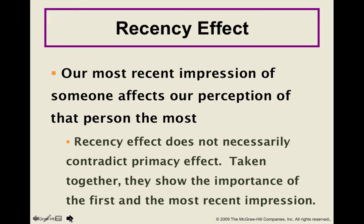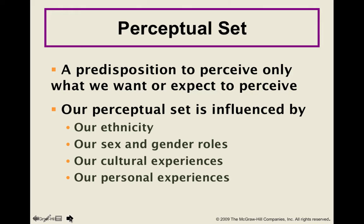Our perceptual set limits what we perceive. Our perceptual set is our ideas about the world — what we use when we go through the perception process. We have a predisposition to perceive only what we want to or expect to perceive. Our experience and our expectations that spring from that experience cause us to see things in a particular way. That perceptual set is influenced by everything we've experienced: our ethnicity, sex and gender roles, cultural experiences, and personal experiences all play into it — and it limits us to seeing what we want to see.